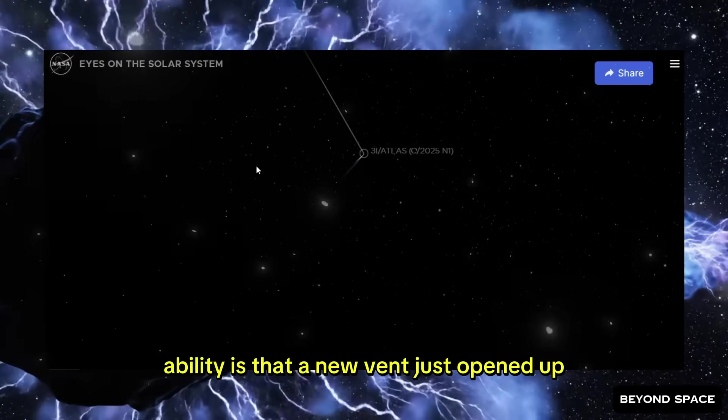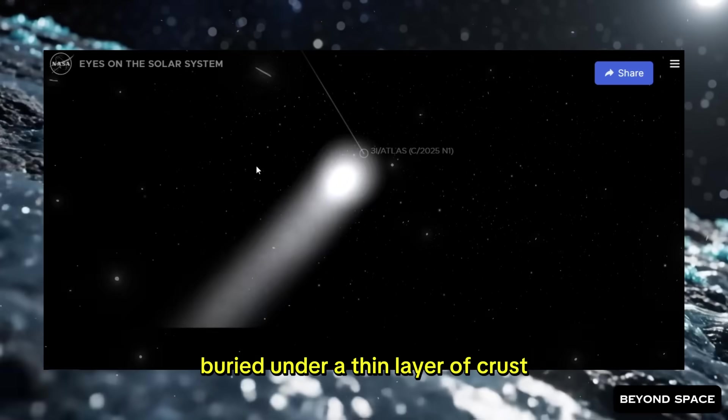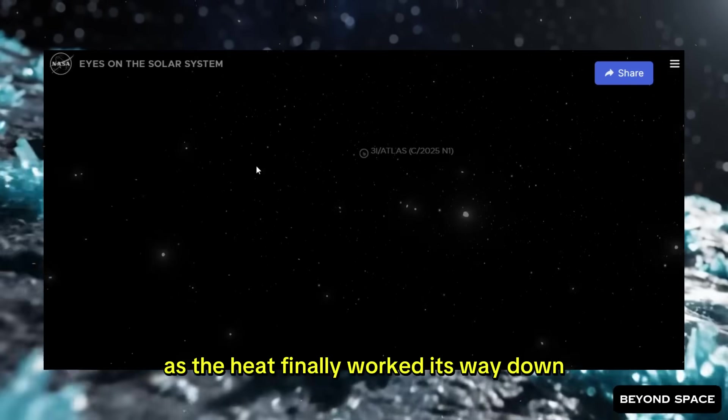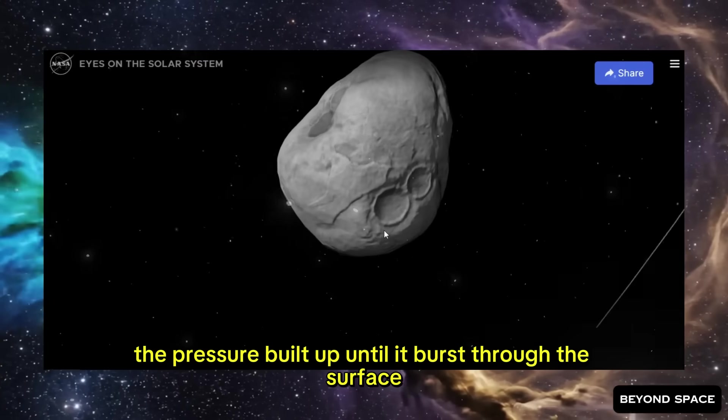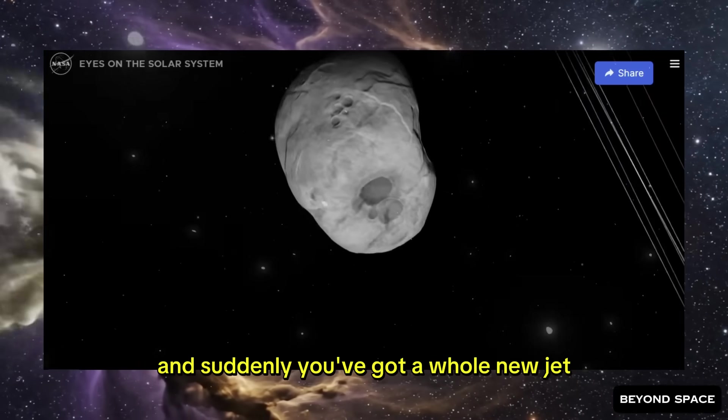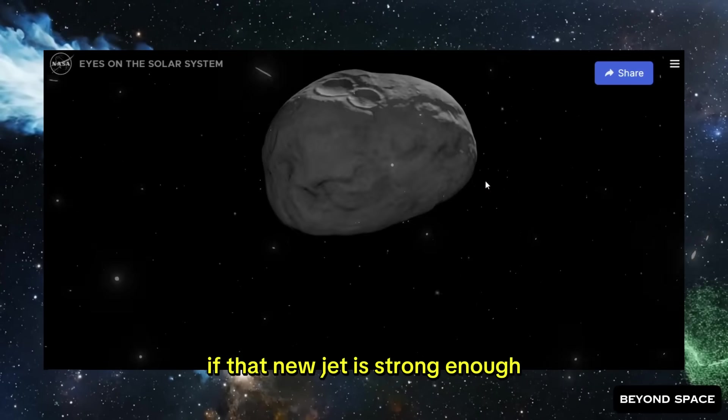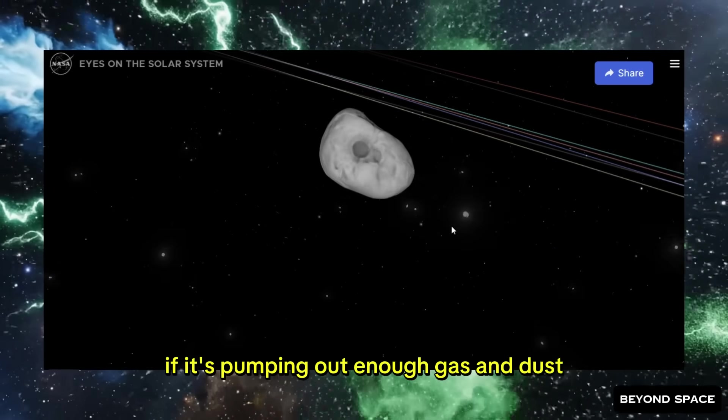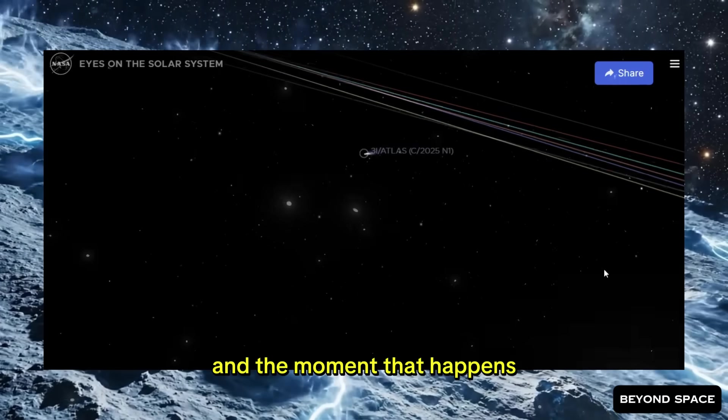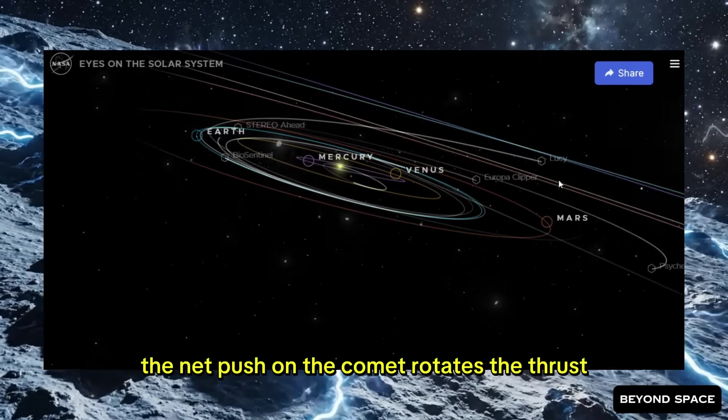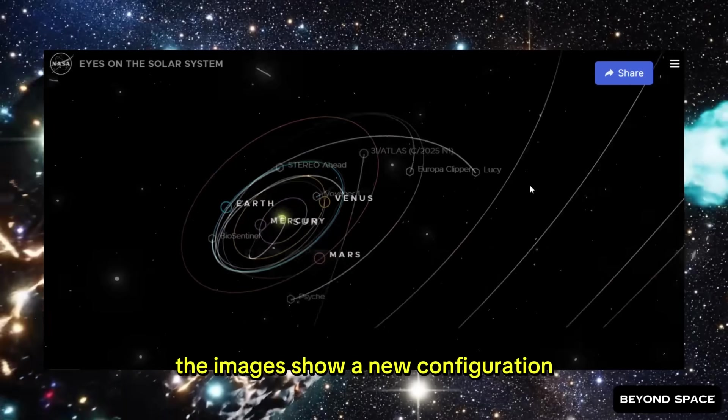One possibility is that a new vent just opened up. Maybe there was a pocket of volatile ice buried under a thin layer of crust on a different part of the nucleus. As the heat finally worked its way down to that depth, the ice reached its breaking point. The pressure built up until it burst through the surface, and suddenly you've got a whole new jet firing from a completely different location. If that new jet is strong enough, if it's pumping out enough gas and dust, it could rival or even overpower the original vent. And the moment that happens, the net push on the comet rotates. The thrust vector shifts. The orbit changes. The images show a new configuration.